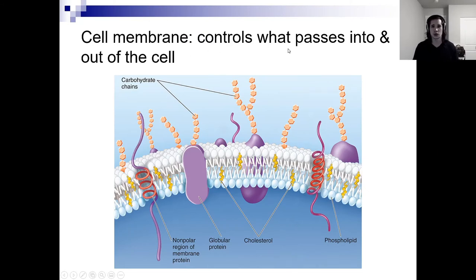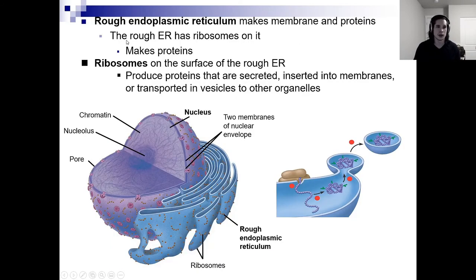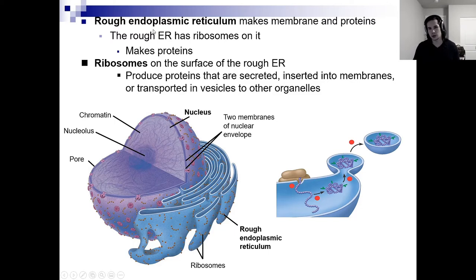The cell membrane controls what passes into and out of the cell — it's kind of like the border. The rough endoplasmic reticulum makes membrane and proteins. It has ribosomes on it — that's what makes it rough. Those little studded things on its surface are the ribosomes. Ribosomes can also be free-floating within the cytoplasm. They produce proteins that are secreted, inserted into membranes, or transported in vesicles to other organelles.